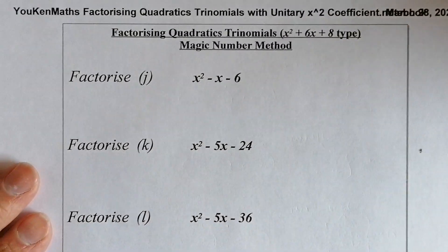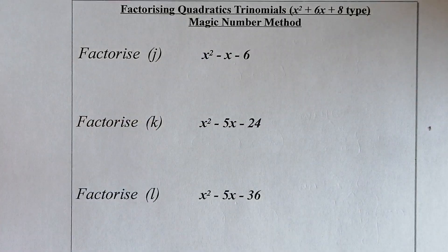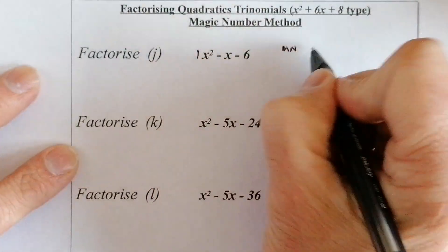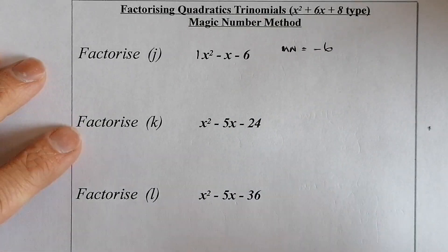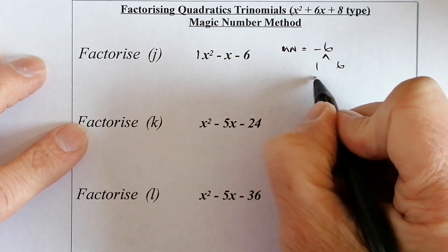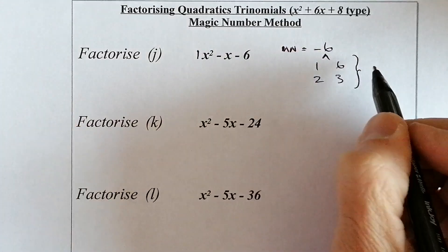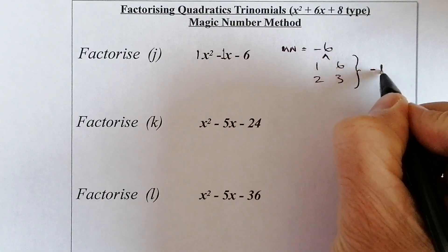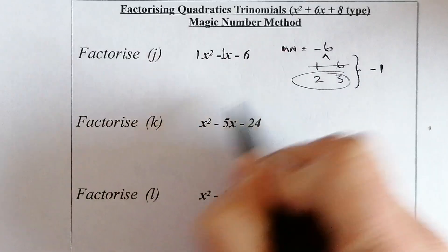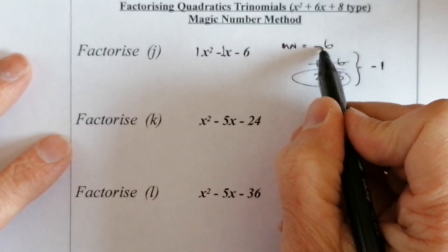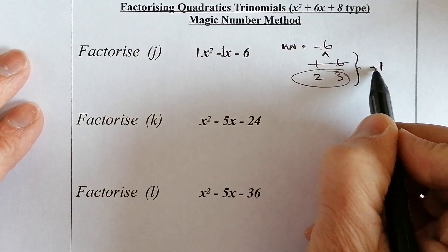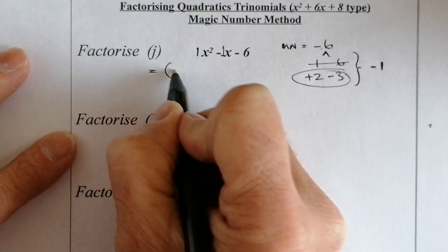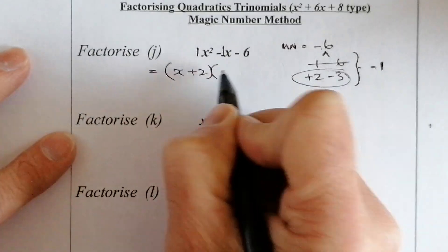Next question has both minus signs. Magic number is 1 times −6 = negative 6. Factors of 6: 1 and 6, 2 and 3. I'm trying to make negative 1 — one minus, one plus. Since it's negative, the bigger number is negative: negative 3 and positive 2 multiply to −6 and add to −1. So the answer is (x + 2)(x − 3).